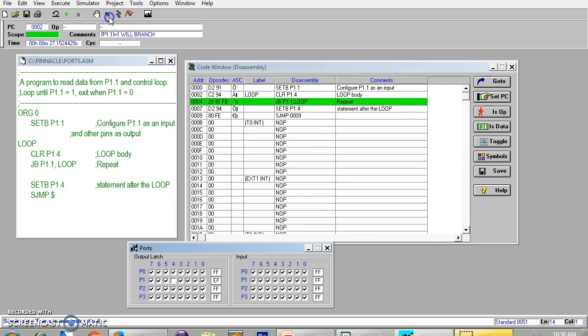So this loop keeps executing until the P1.1 is clear. So here P1.4 is clear by this loop. When I clear this P1.1, we will see the output. The loop exits and P1.4 gets set.